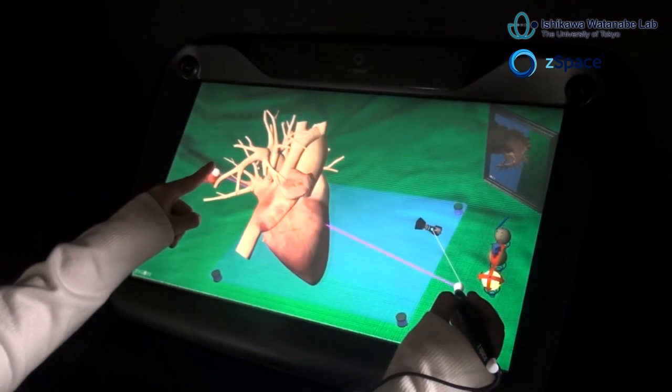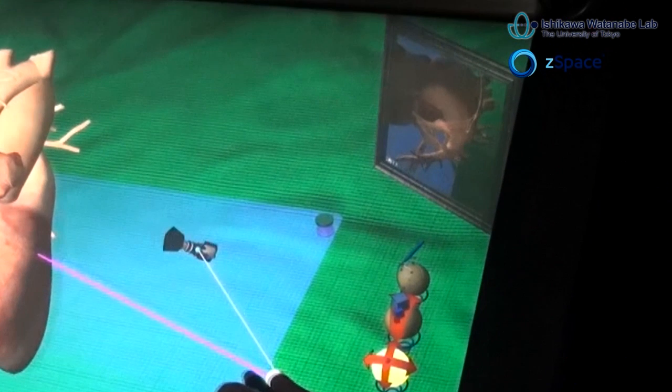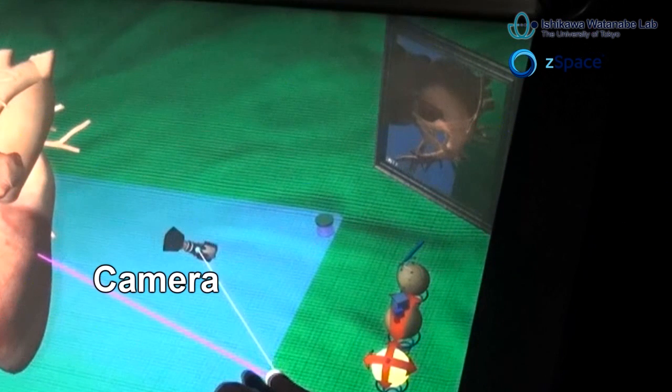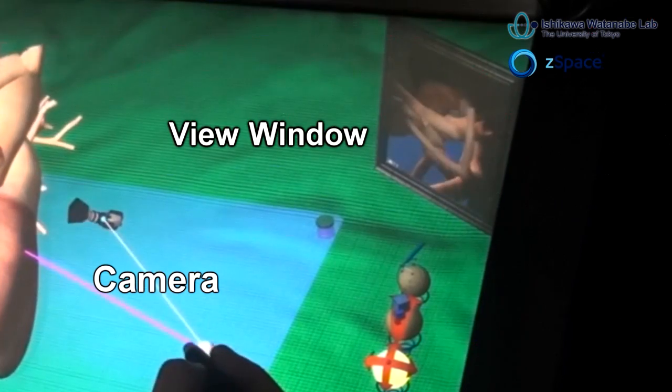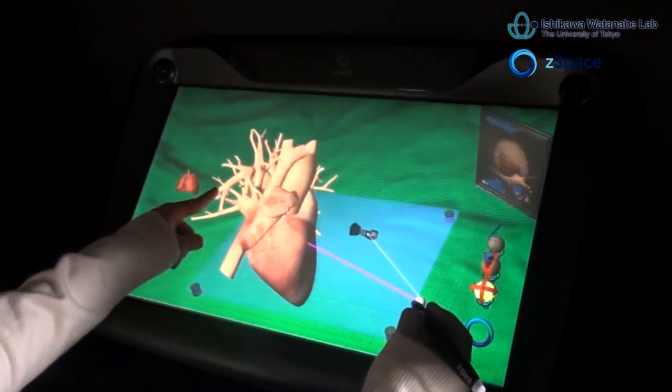The hand gesture system can also be used with the ZSpace stylus. In this application, a picture-in-picture provides the user with an alternate view of the heart through the use of a virtual camera. Here the user can manipulate the camera using the stylus while manipulating the heart model with their bare hand at the same time.